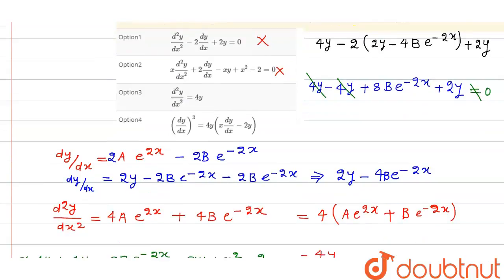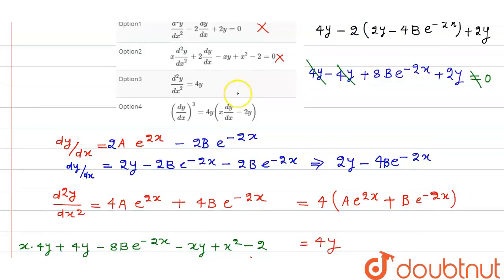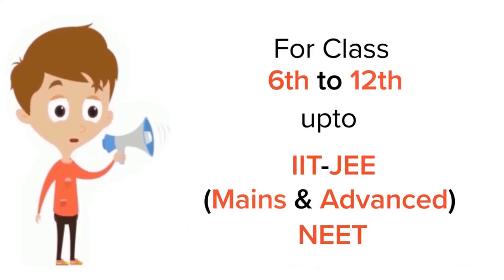Now d²y upon dx² is equal to 4y as you can see, so option third is correct. And this is dy by dx, this is also incorrect because this is the option first. Option third we get, so option 3 is our correct answer.